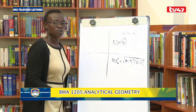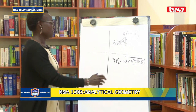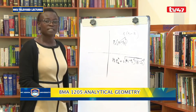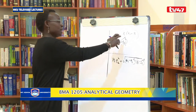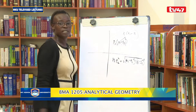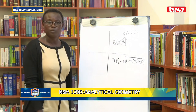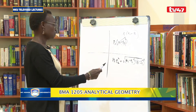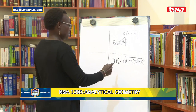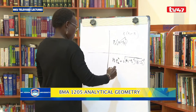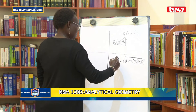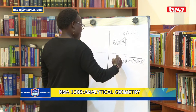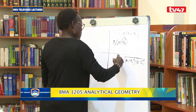The distance P1P2 is equal to the square root of (x1 minus x2) squared plus (y1 minus y2) squared. These coordinates can still be (x2 minus x1) depending on where x2 and x1 are. So P1P2 is the square root of that expression.